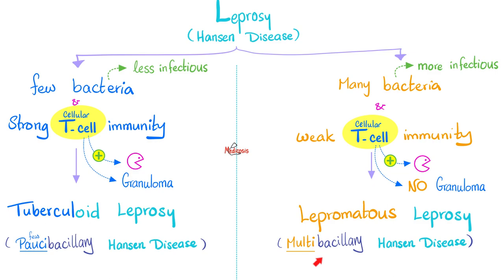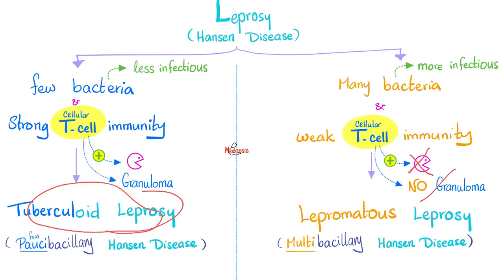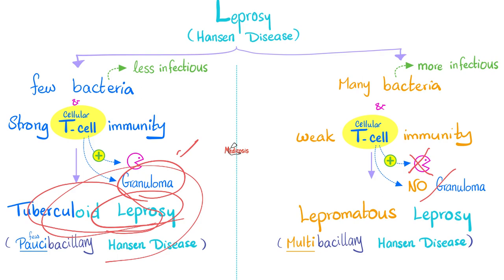In tuberculoid leprosy, my T cell immunity is strong, activating macrophages — they become epithelioid cells and make a granuloma, just like the tubercle, the granuloma of tuberculosis, hence 'tuberculoid' leprosy. But in lepromatous leprosy, your immunity is weak; you cannot make a granuloma because you could not activate your epithelioid cells. Therefore, tuberculoid leprosy is diagnosed by a skin test — you're looking for the induration, the granuloma, the type 4 hypersensitivity reaction caused by T lymphocytes.